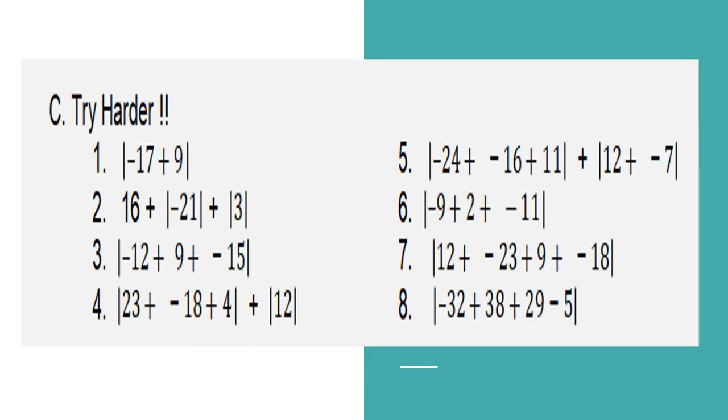And the last part for the try harder, for number 1, what is the absolute value of negative 17 plus 9, number 2, what is the sum of 16 plus the absolute value of negative 21 plus 3, and so on and so forth.